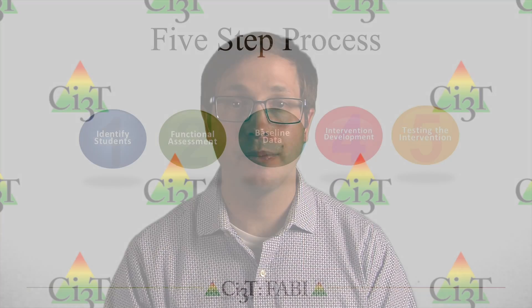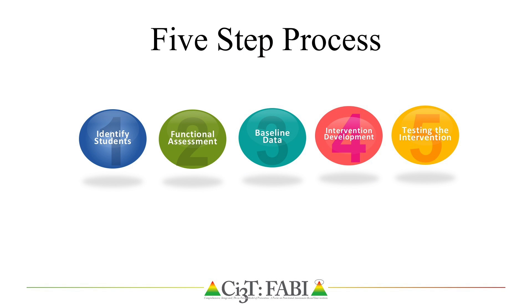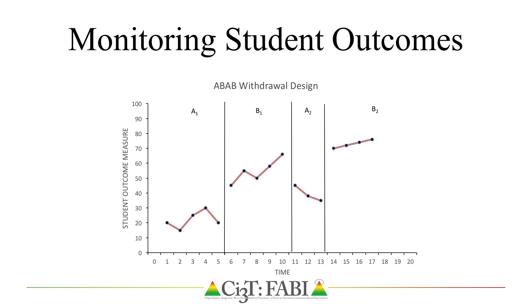As part of the FABI process, we begin monitoring student outcome data in Step 3, Collecting Baseline Data. In most single case designs used to demonstrate the effectiveness of an intervention, it is important to get an accurate measurement of present levels of student performance by collecting outcome data before the intervention is introduced. We call this baseline data. Graphing data provides a means of organizing data collected and creates a picture allowing you and your team to determine the effect of the intervention on the behavior of interest.